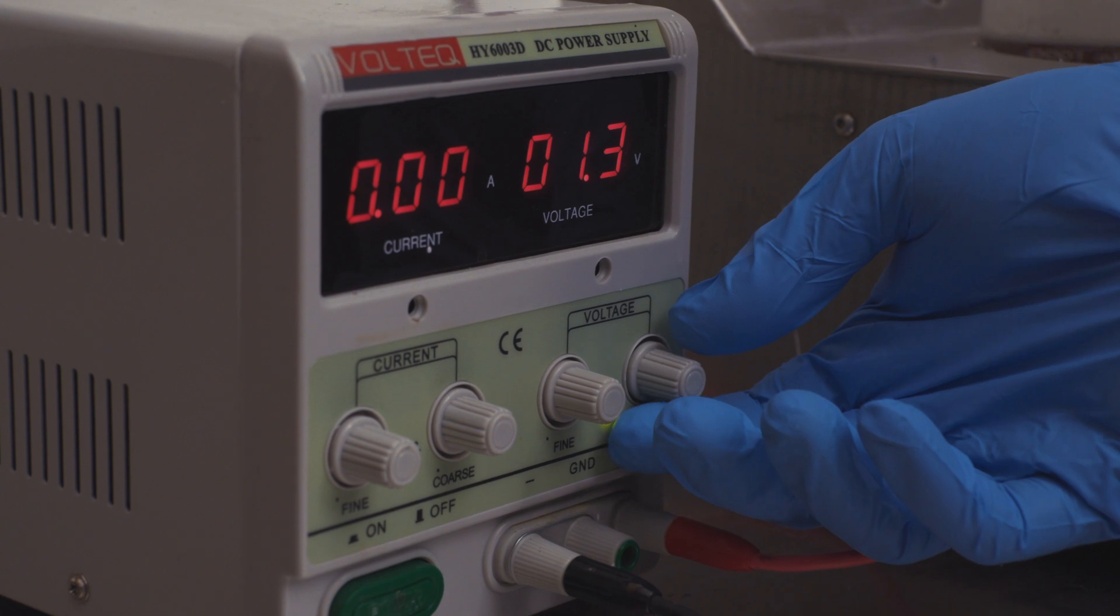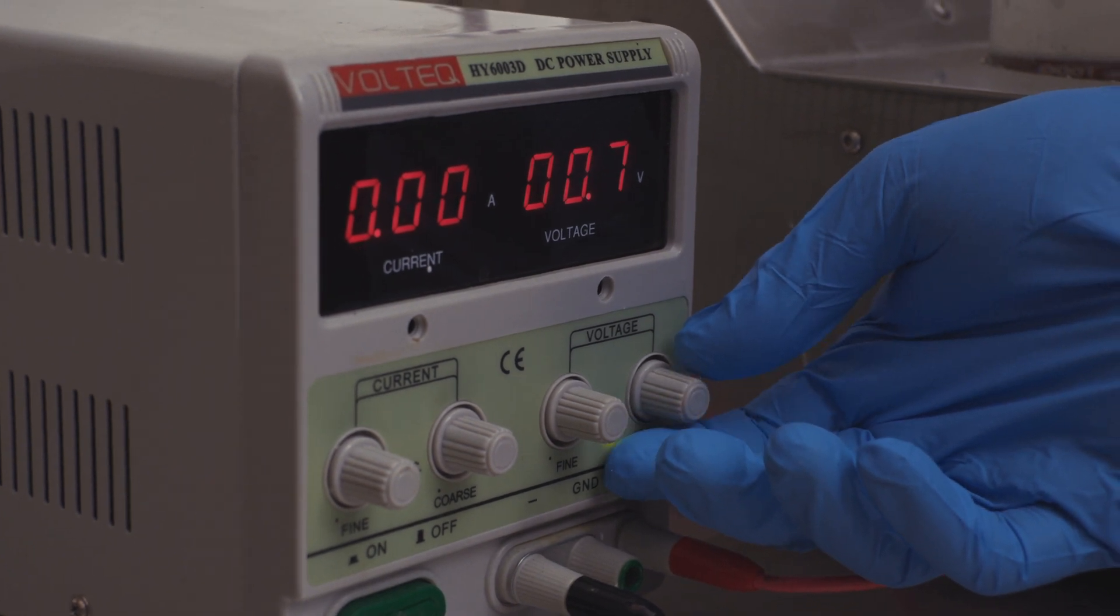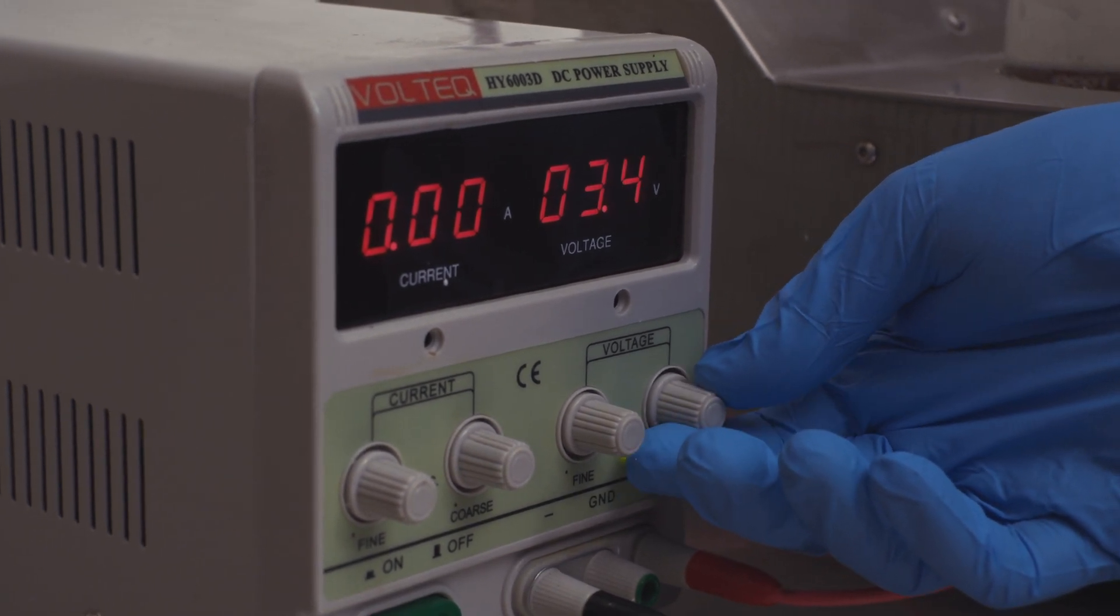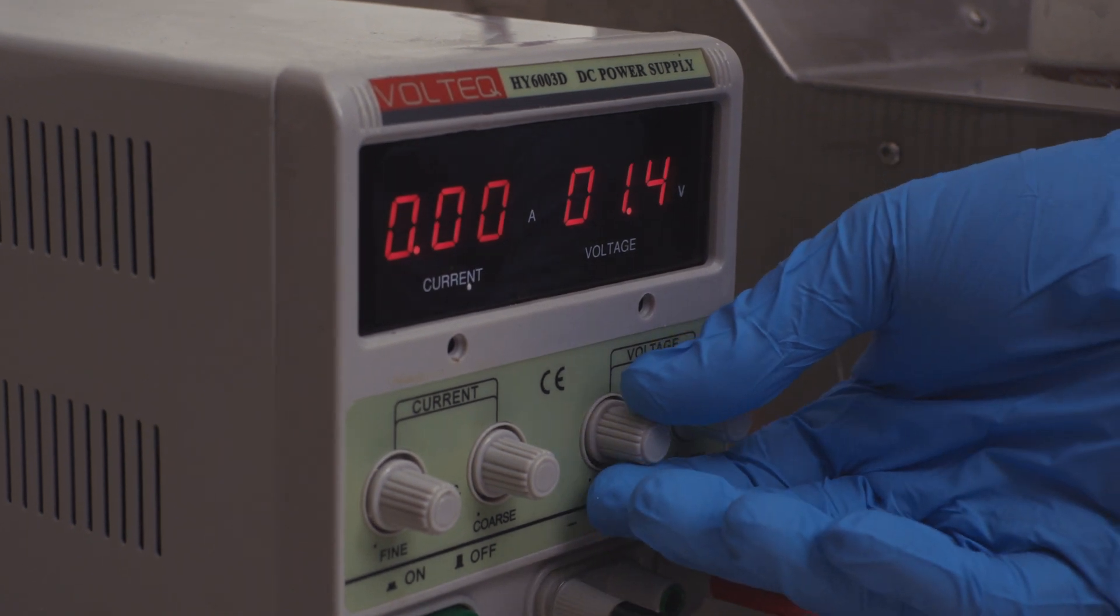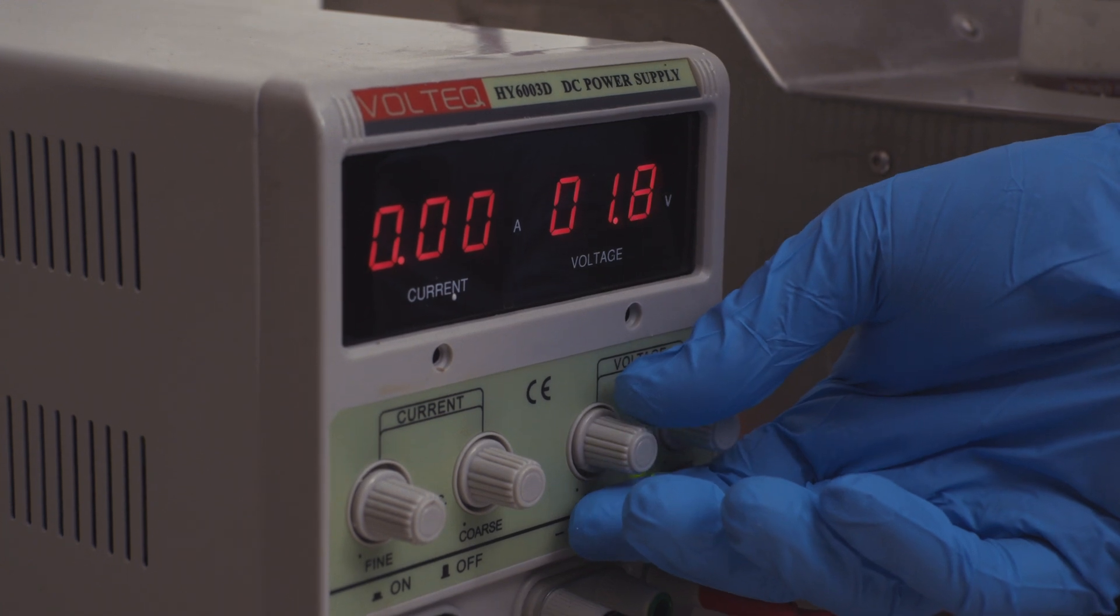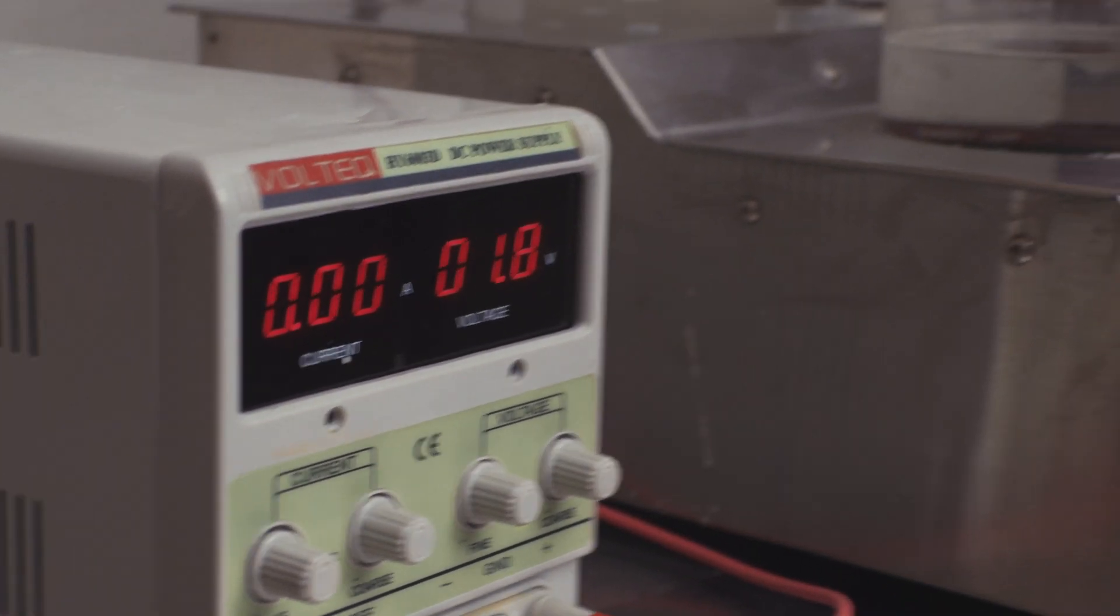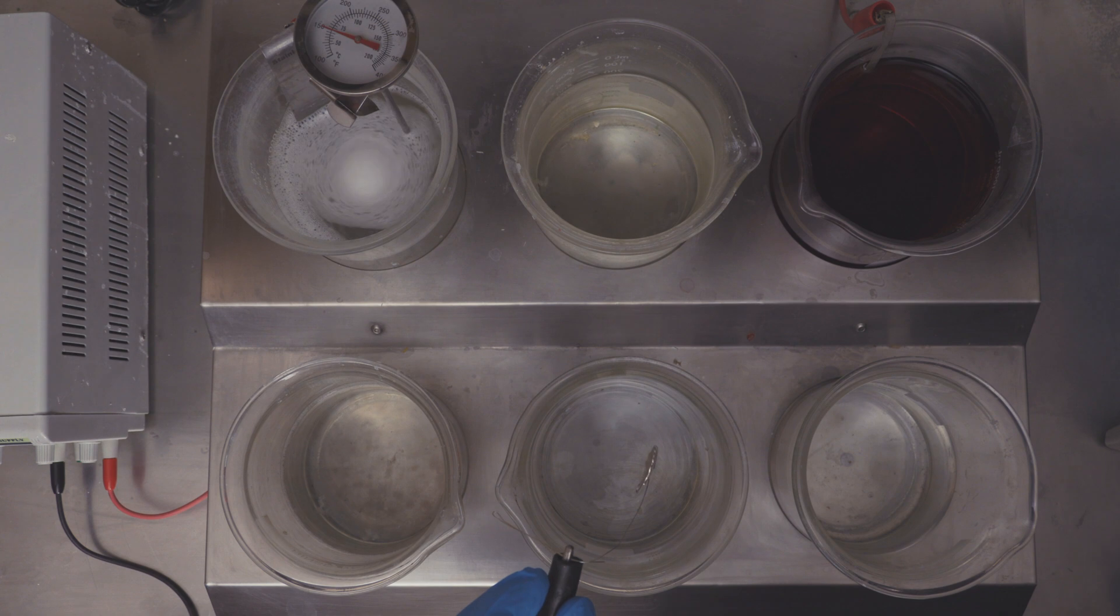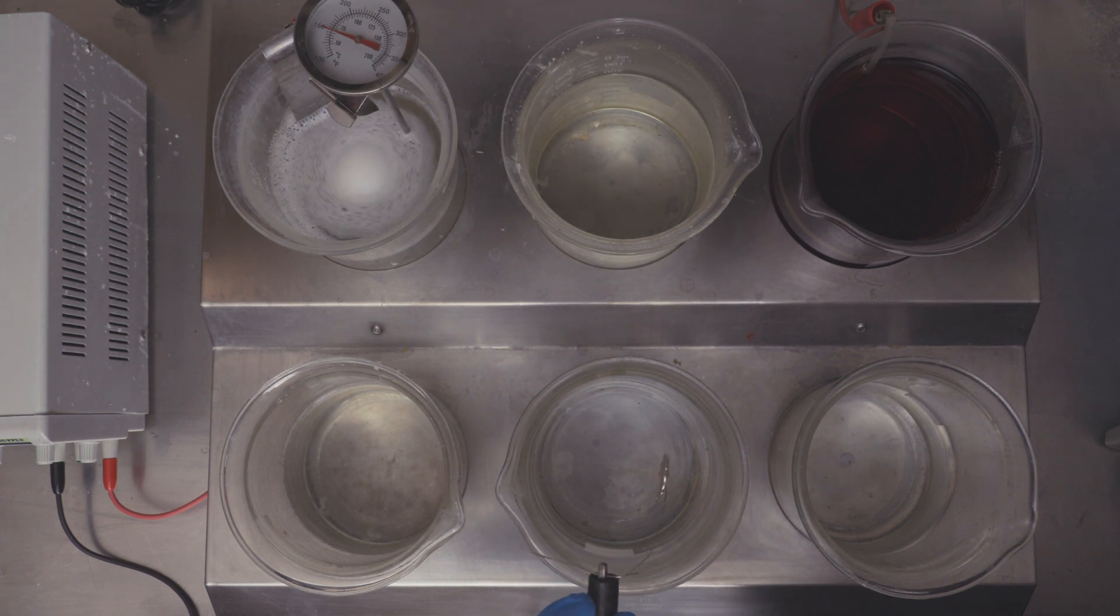So for the platinum plating solution I want to adjust this down to 1.8 volts. That is optimum voltage for the PT-Lux solution. So there we go, 1.8 volts. We are using a platinized titanium anode in the PT-Lux and we want it submerged in the solution for about 90 seconds.